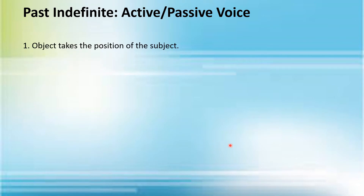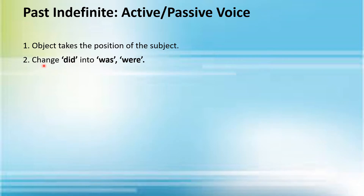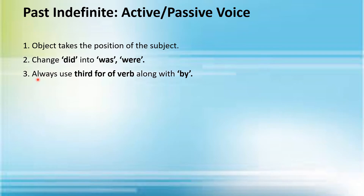Now let's talk about the past indefinite tense formation and its active voice conversion into passive voice. The following rules are applicable. Number one: the object takes the position of the subject and the subject takes the position of the object. Number two: change 'did' into 'was' or 'were'. In the passive voice of the past indefinite tense, you use 'was' or 'were' as the auxiliary verbs. In negative sentences, you omit 'did' and add 'was' or 'were' instead.